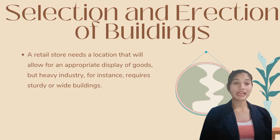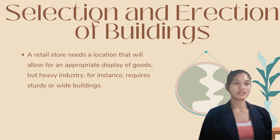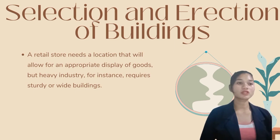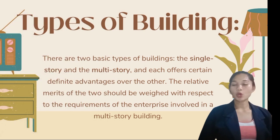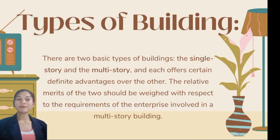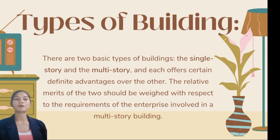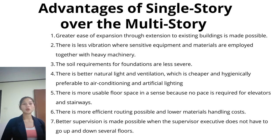Let's move on to the second subtopic: selection and erection of buildings. For instance, heavy manufacturing necessitates large, robust structures, while a storefront needs to be suited so that a product may be displayed properly. Buildings can be divided into two categories: first, single-story buildings, and second, multi-story buildings. Each has clear advantages, and it is important to analyze their relative qualities in light of the needs of the particular organization.